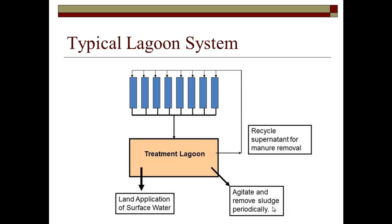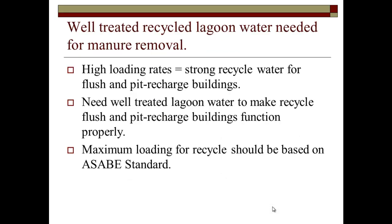In South Carolina, that means no more than 5 lbs of VS per 1,000 cubic feet per day. In Minnesota, it's no more than 3; in Florida, no more than 6. That's what keeps good supernatant quality to go back through. There's land application of the effluent, and periodic agitation and removal of the sludge — that's the way it's supposed to work. My recommendation is don't exceed the ASAB standard on any of these.